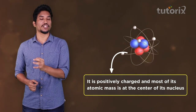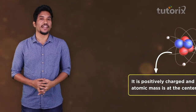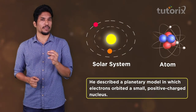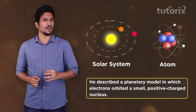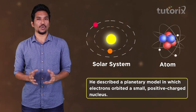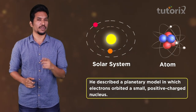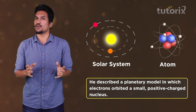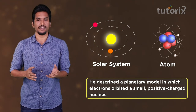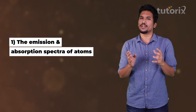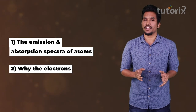Rutherford described the planetary model, in which electrons orbited a small positively charged nucleus. However, his model couldn't explain certain factors, like the absorption and emission spectra of an atom, nor could it explain why the electrons did not crash into the nucleus when they were oppositely charged.